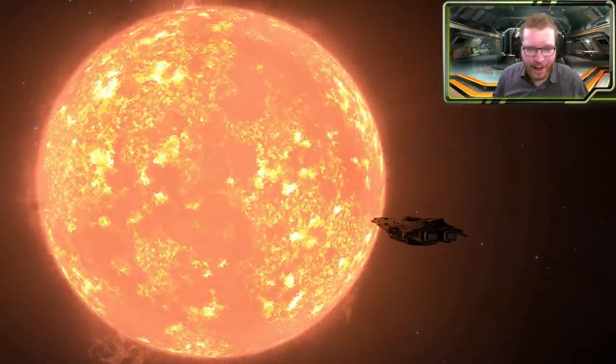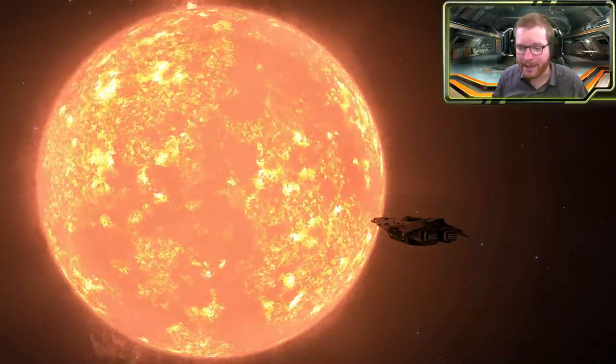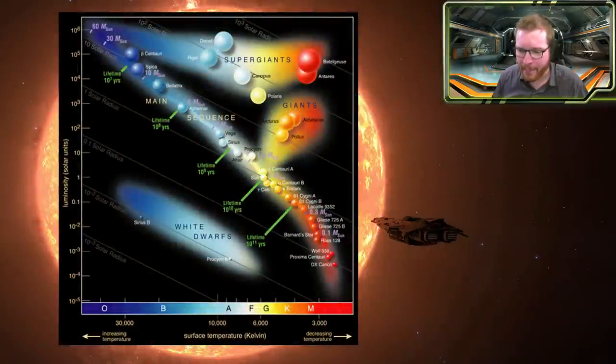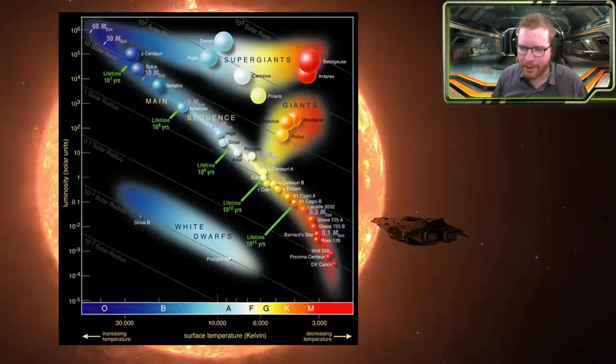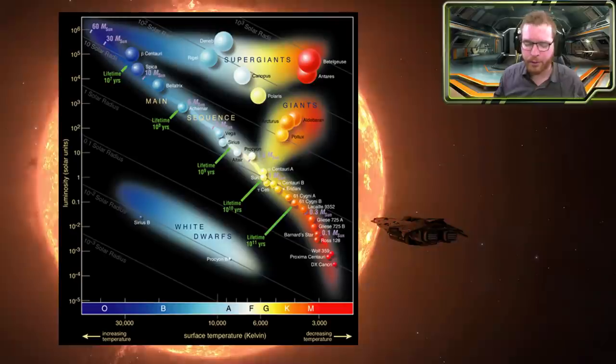So I began looking around and the first thing I did was I went in and looked up what's called an HR diagram and you can see one here. It's basically a diagram that shows how stars evolve and the relation between the luminosity and the surface temperature.